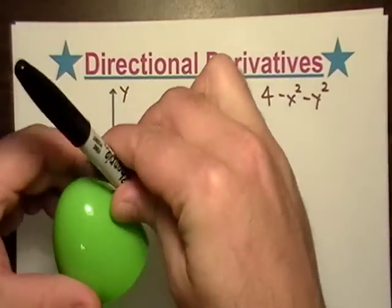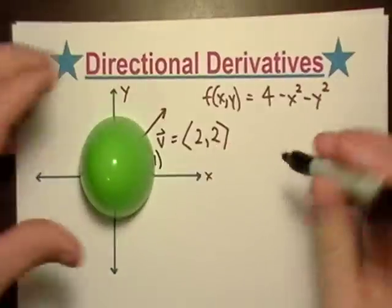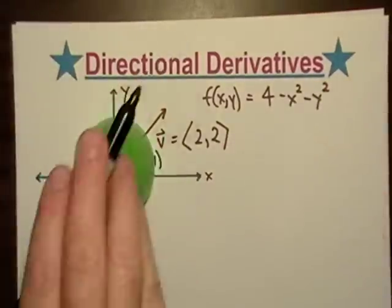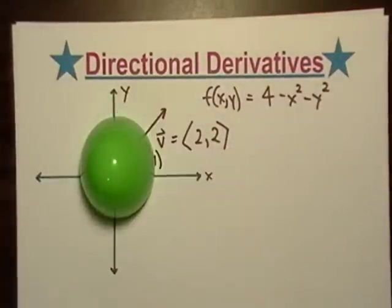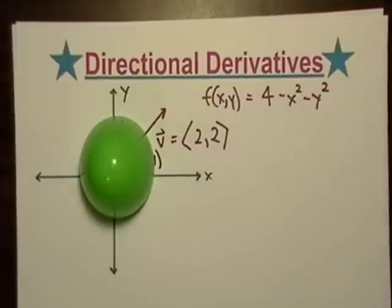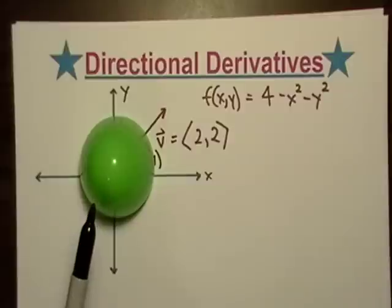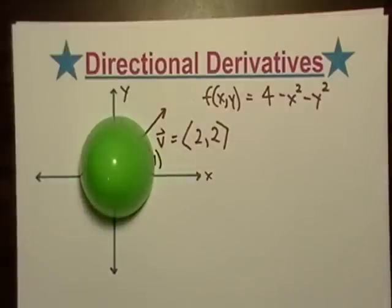The derivative should be negative — if I'm going in this direction, I'm going downward. So if we take the derivative there, it should be negative. And if I take the derivative over here at, say, (-1, 1), it should be positive.